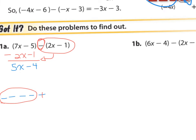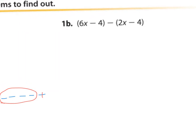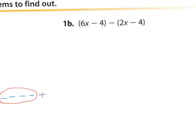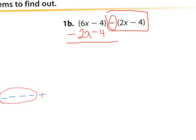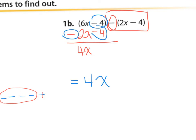Let's try question 1B. We're going to do the same — I'm going to take this portion of the number sentence and place it down here, starting with my subtraction sign: minus 2x minus 4. So I have 6x, take away 2x — brings me to 4x. And now I have 4 negatives, and I'm going to take away those 4 negatives. My answer is simply 4x, because I have 4 negatives and I'm taking away those same 4 negatives — I'm left with nothing.